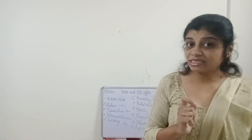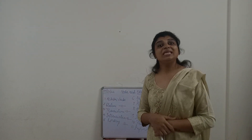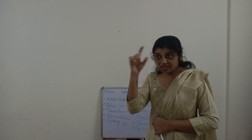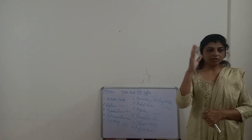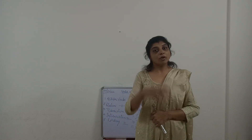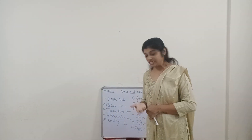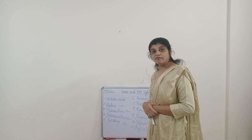Regular verbs are verbs whose past tense form and past participle both end with 'ed'. There are three forms of verbs: main verb, past tense, past participle. For example: walk – walked – walked; cook – cooked – cooked. Note that the 'd' in 'walked' or 'cooked' is silent. When past tense and past participle end with 'ed', the verb is a regular verb.